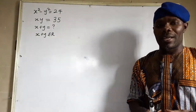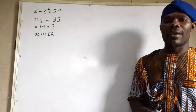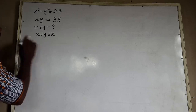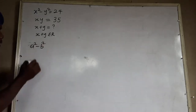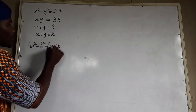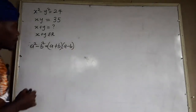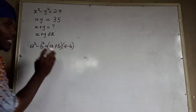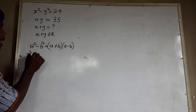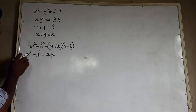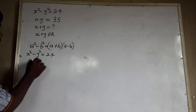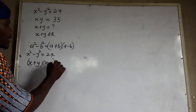The first thing we're going to apply is the difference of two squares. We have the identity: a squared minus b squared equals (a plus b)(a minus b). So x squared minus y squared equals 24 can be rewritten as (x plus y)(x minus y) equals 24.